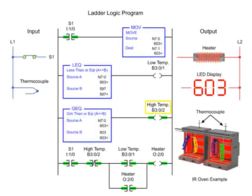When the high temp output is true, the heater turns off and remains off until the temperature reaches 597 or lower. The cycle is repeated to maintain the average set point temperature of the oven at 600 degrees Fahrenheit.